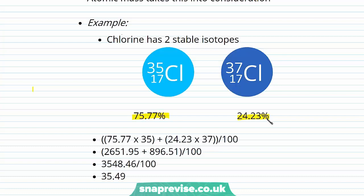We can work out the relative atomic mass by multiplying the mass number of each isotope by its percentage abundance and adding them together. So we have 75.77% × 35, plus 24.23% × 37, divided by 100, which gives us 35.49. If you look in your periodic table, the mass number of chlorine is given as between 35.45 and 35.5 depending on rounding — and this explains why it's not a whole number.